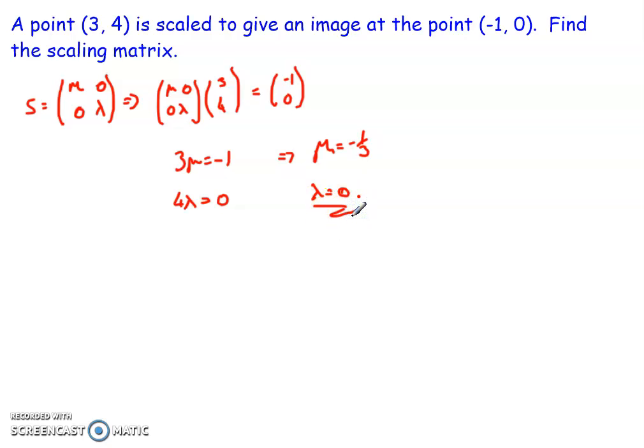So great, I've got μ and λ, but it wants the scaling matrix, so what you have to do is make sure you write the matrix out. Don't just leave it as μ equals -1/3, λ equals 0. It wants a matrix, so tell them what that matrix is. So in this case, S is equal to -1/3, 0, 0, 0. So that there is a scaling matrix that's taken this point and given an image at this point here. So I can use that for any point within that system to make the full transformation if I was to make a shape out of several points.